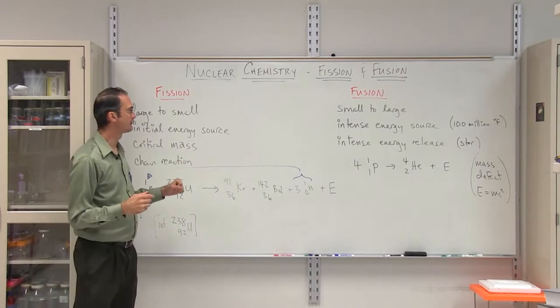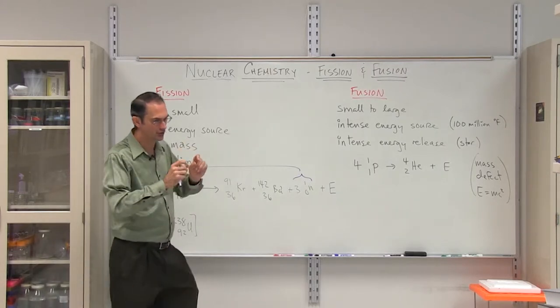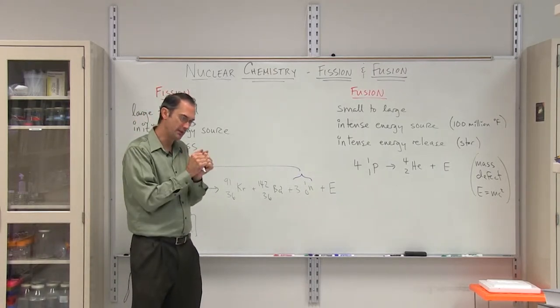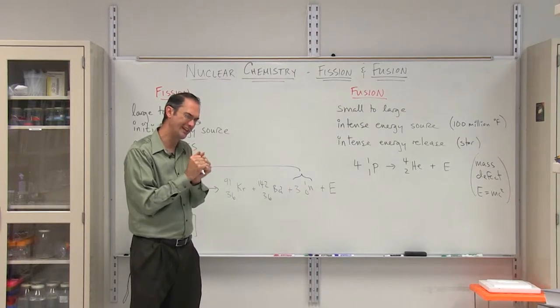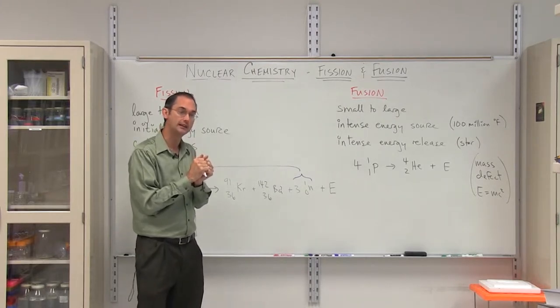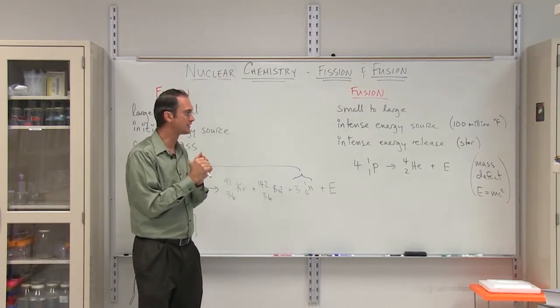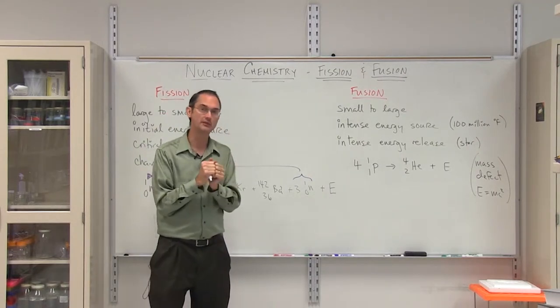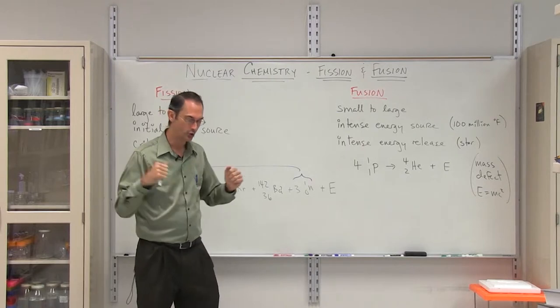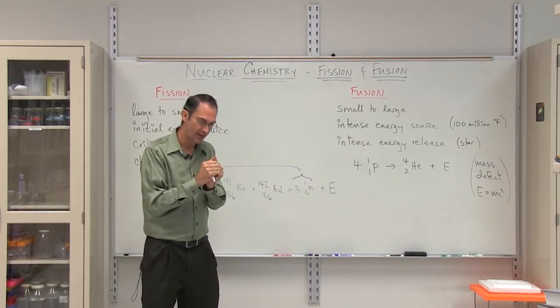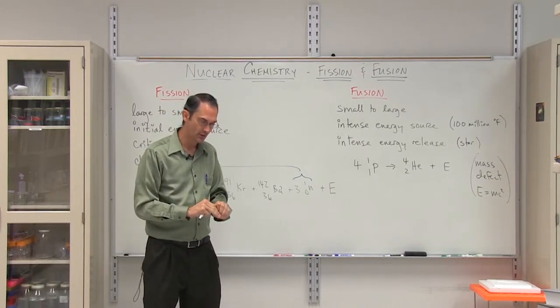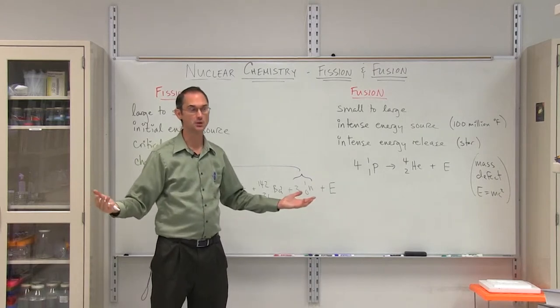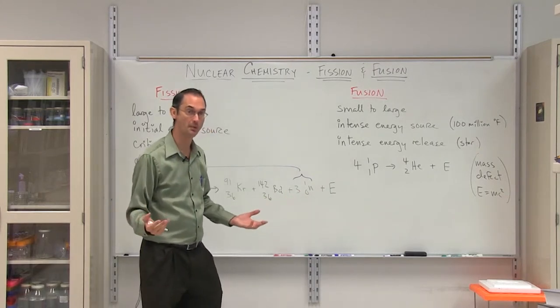On the other hand, if we take a look at fusion, in fusion you take small nuclei and you push them together in such a way that they get glued, and in the process they give up energy. Now that is very counterintuitive. It's due to something called the mass defect, and actually that's where the concept of E equals MC squared comes from. You put in so much energy that you lose mass and you generate more energy. It's a strange process, but it is also a very powerful process.